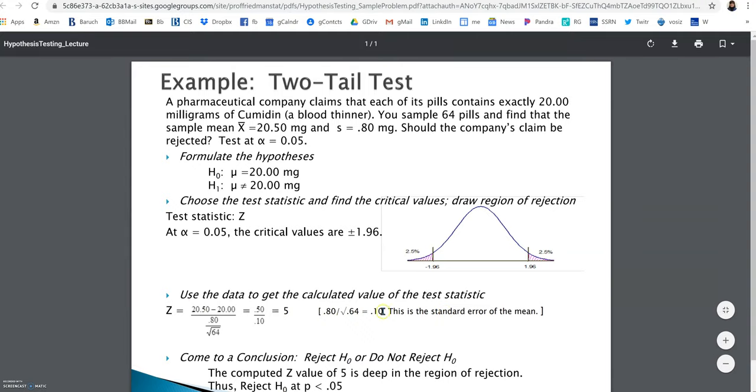And then the third part is what we get from the data, from the empirical data, the calculated value of the test statistic. And then finally, you need to come to a conclusion. You compare your calculated value of the test statistic with the critical values that you got in the second step. And you either reject the null hypothesis or you don't reject the null hypothesis. But in any case, you need to have that final step. It's not a hypothesis test without each of these four steps being present.